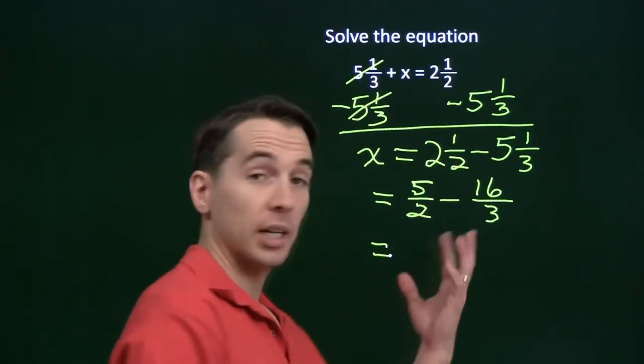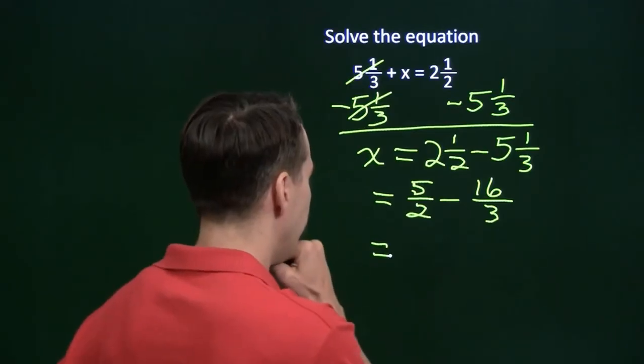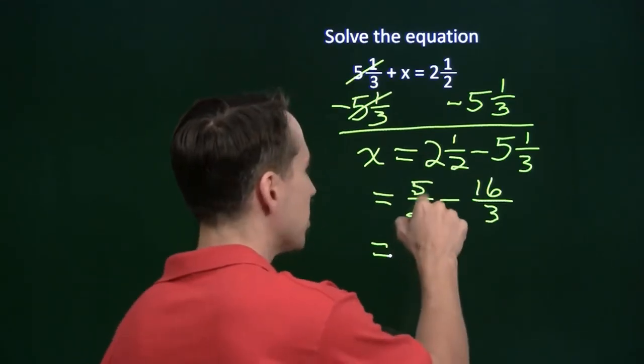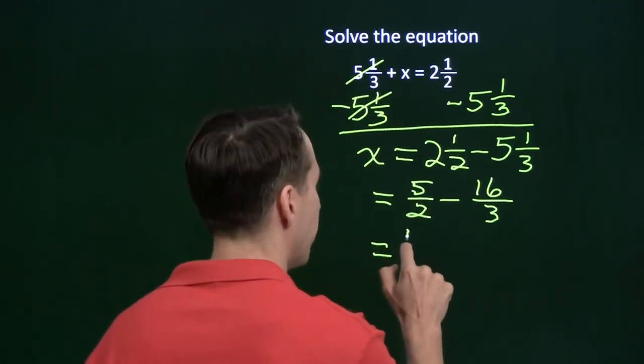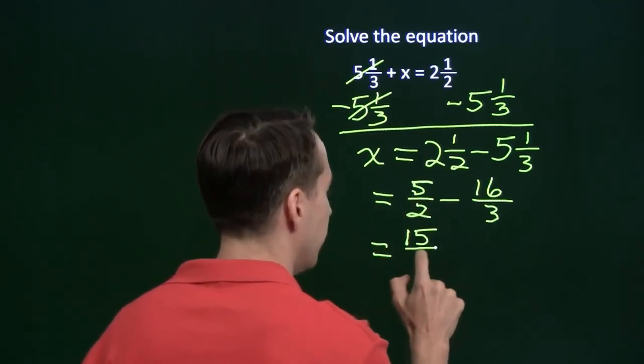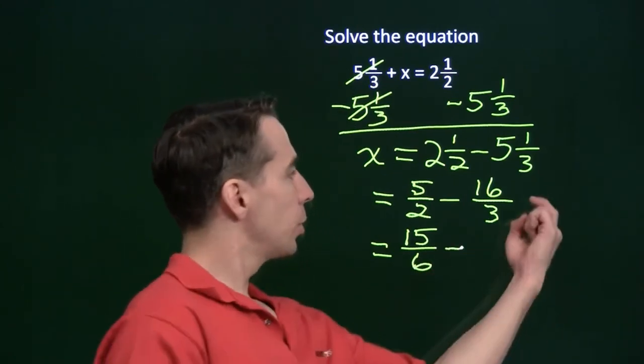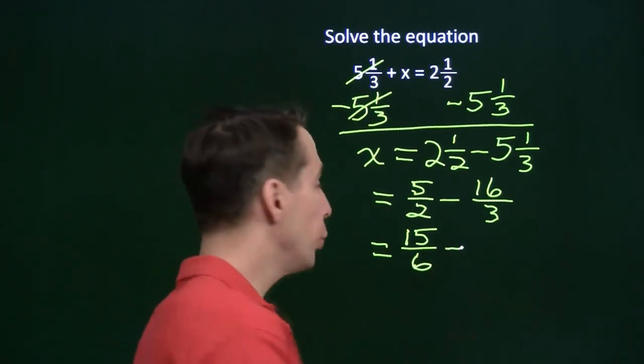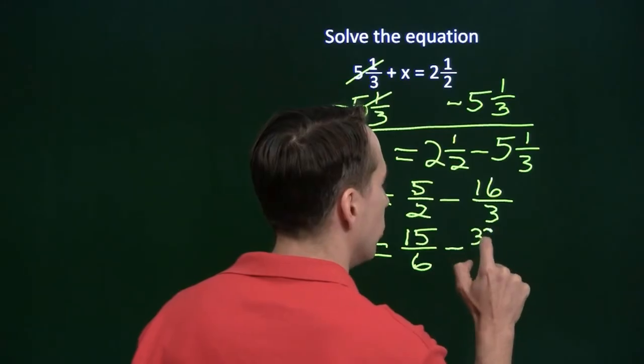And now we're going to need a common denominator. Let's see, 5, 2 and 3, common denominator is 6, so we'll multiply the top and the bottom here by 3. This is 15 sixths. Here we multiply the top and the bottom by 2, we get 32 over 6.